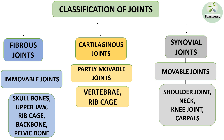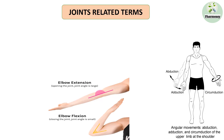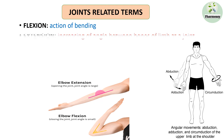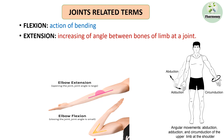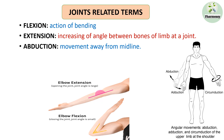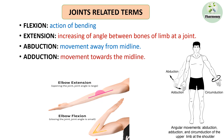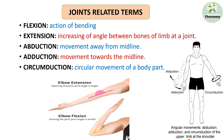There are some important joint-related terms such as flexion, extension, abduction, adduction, and circumduction. Flexion is an action of bending, and extension means increasing the angle between the bones of a limb at a joint. Abduction means movement away from the midline, adduction means movement towards the midline, and circumduction refers to circular movement of a body part, as shown in the figures.